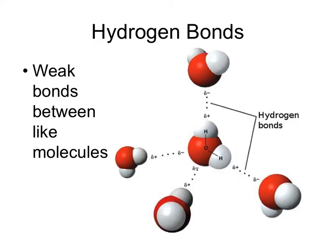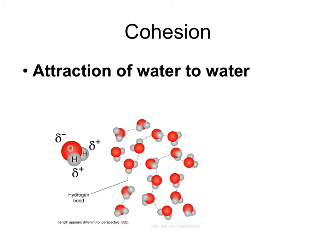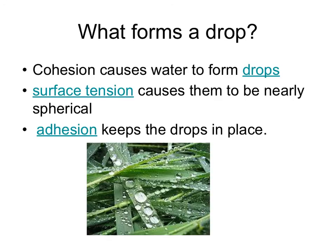Water actually sticks to itself pretty well — we refer to this as cohesion. Water is a polar molecule, so it's conducive to hydrogen bonds between individual water molecules. You've seen drops of water cling to surfaces before. Cohesion causes water to form drops, and we call it surface tension because the drops appear nearly spherical.